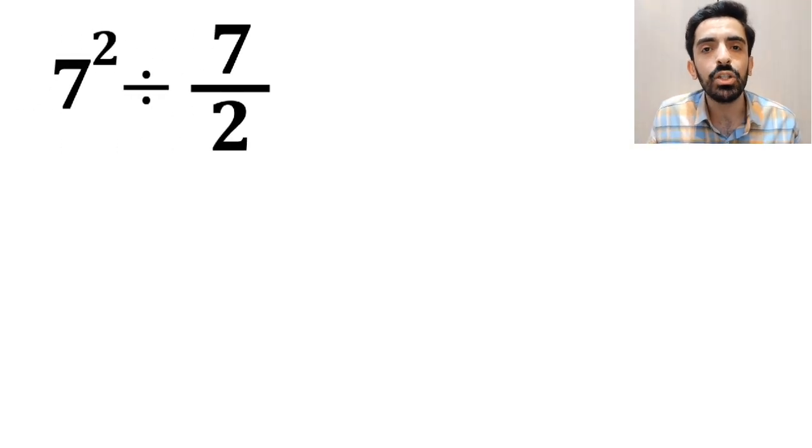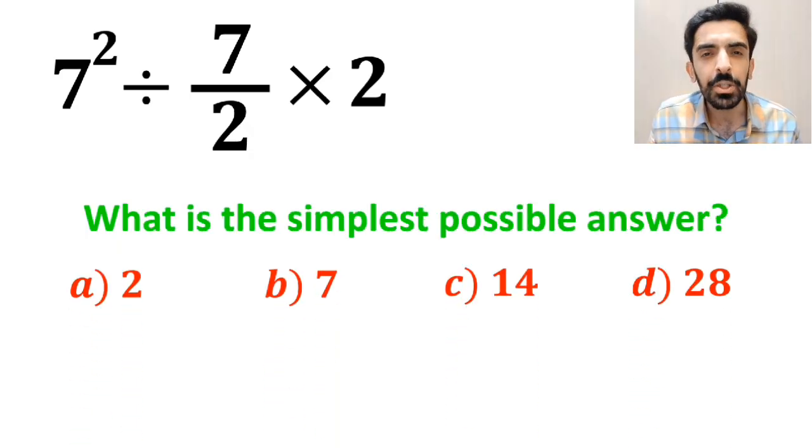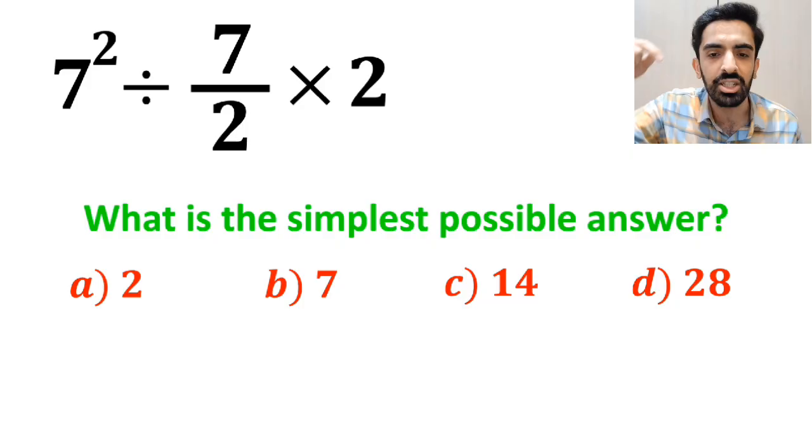If we have the expression 7 to the power of 2 divided by 7 over 2 multiplied by 2, then what is the simplest possible answer for this expression? Which option do you think is the correct answer to this question?